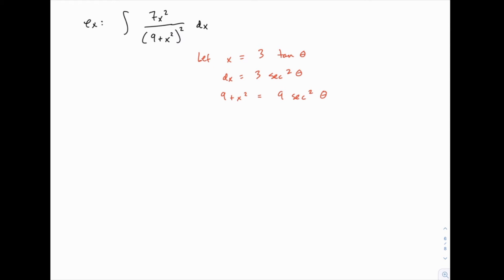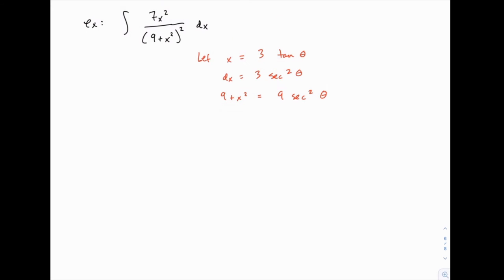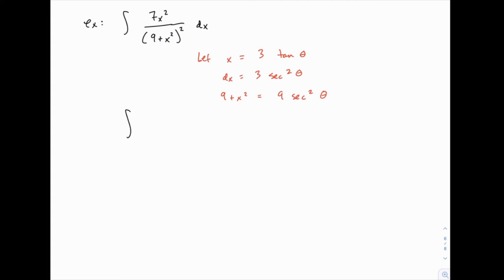So now, when we do this, it looks a little different, but the approach is very similar. So the numerator is 7 times x squared, so we'll have 7 times 9 tangent squared, or 63 tangent squared.